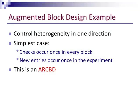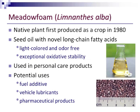I'm going to discuss one particular augmented block design example — the very simplest case where we're only controlling heterogeneity in one direction. The checks occur once in every block, and the new entries occur just once in the experiment. So this would be called an augmented randomized complete block design.